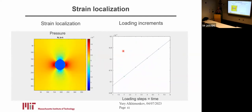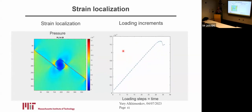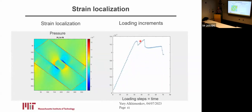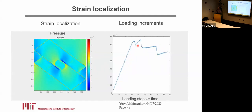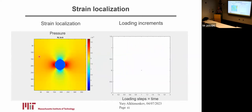What's the physics? We apply small loading increments in strain, which causes stress to increase in the rock. At a certain point, we reach a threshold — this threshold is pressure-dependent — and the material starts to yield. Strain localization occurs, resulting in the development of shear bands.